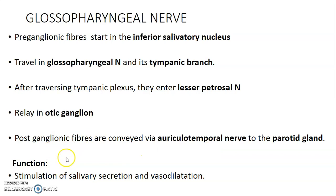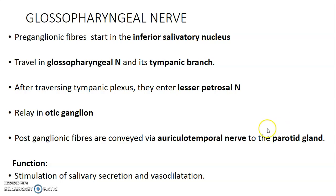From the inferior salivatory nucleus, you have preganglionic fibers through the glossopharyngeal nerve — specifically the tympanic branch — which will enter the lesser petrosal nerve into the otic ganglion and relay postganglionic fibers. These will travel via a branch of the mandibular division of trigeminal to reach the parotid gland, causing it to secrete saliva and causing vasodilation within the gland.